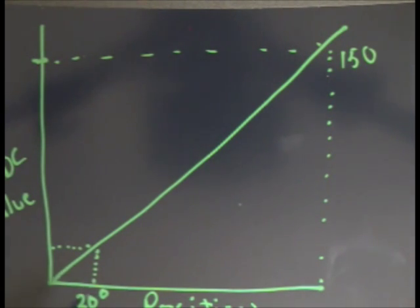taking rise over run. I take the ADC value maximum minus the minimum, and divide it by the degrees: 150 degrees minus 30 degrees. That gives me the slope.